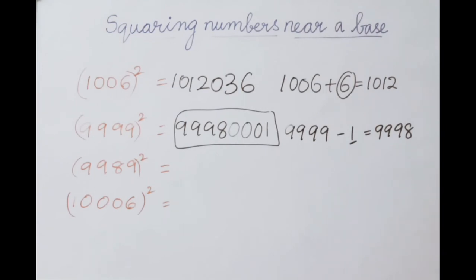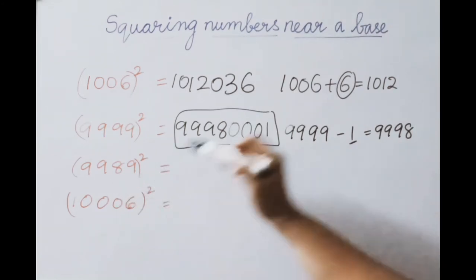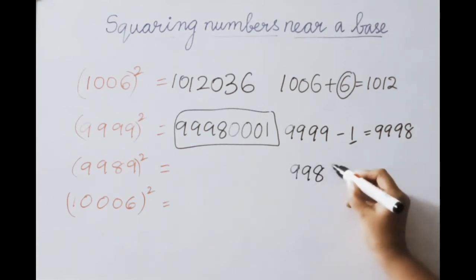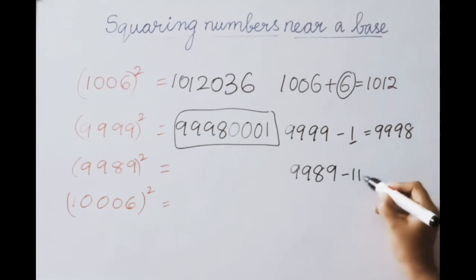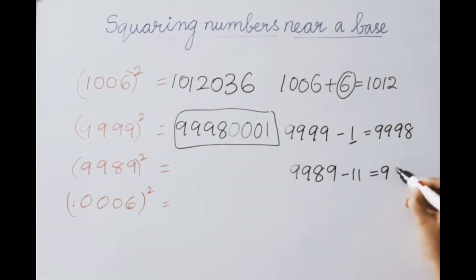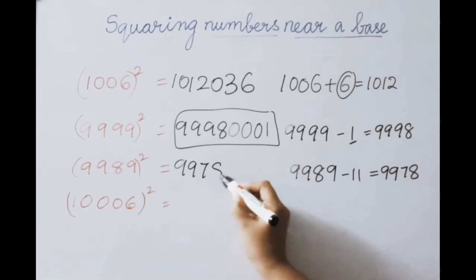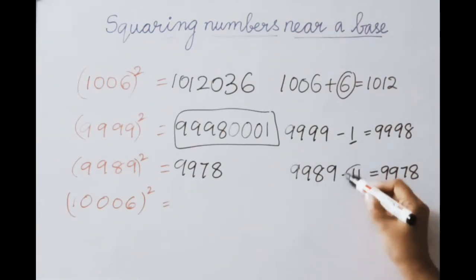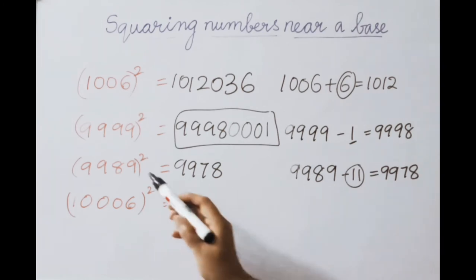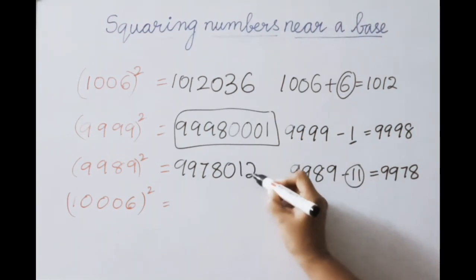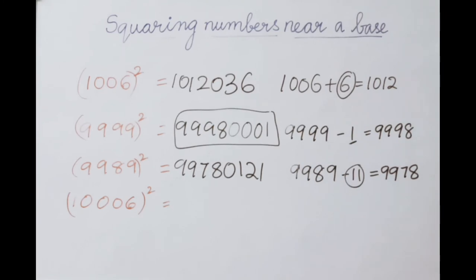Next example: 9989 squared. Base is 10000. 10000 minus 9989 equals 11 — deficient value is 11. Subtract: 9989 minus 11 equals 9978 — first part answer. 11 squared equals 121. Base 10000 means 4 digits allowed, so place one zero: 0121. Therefore 9989 squared equals 99780121.